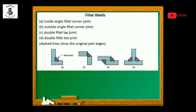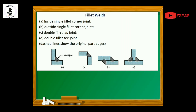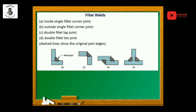In figure C, the double fillet lap joint: two plates of base metal are in lapping conditions, and fillet welding is performed from both ends. Because welding is carried out from both sides and both plates are in lapping conditions, it is known as a double fillet lap joint.